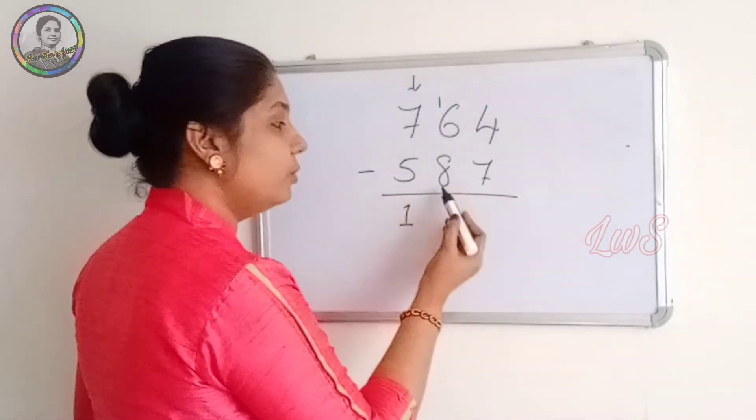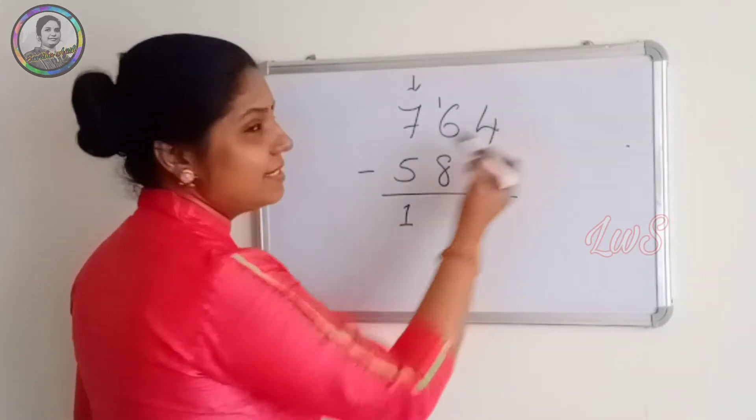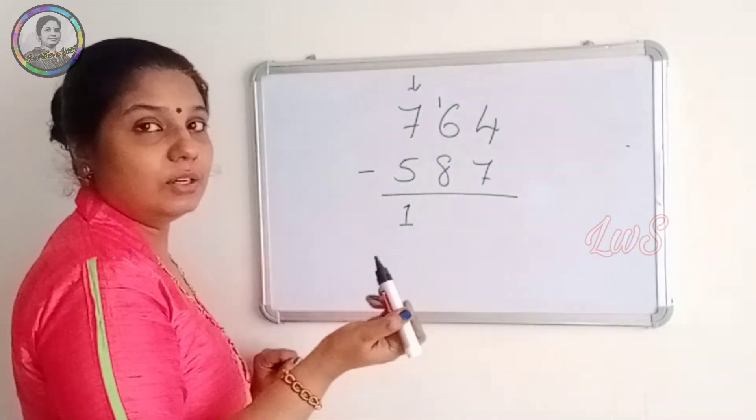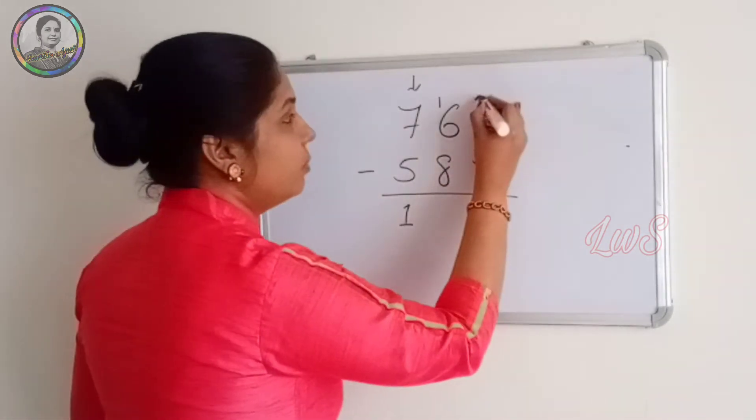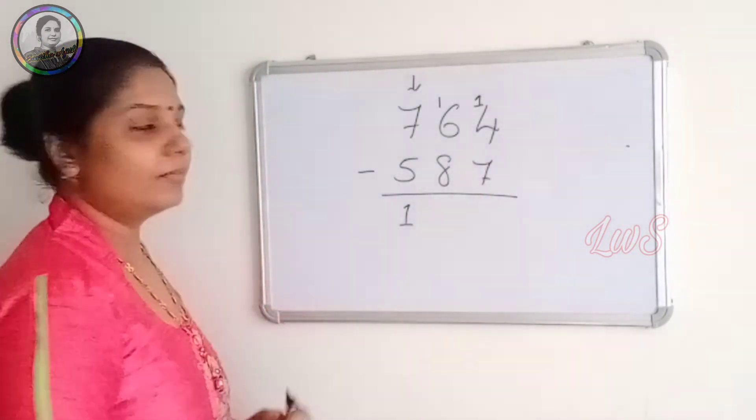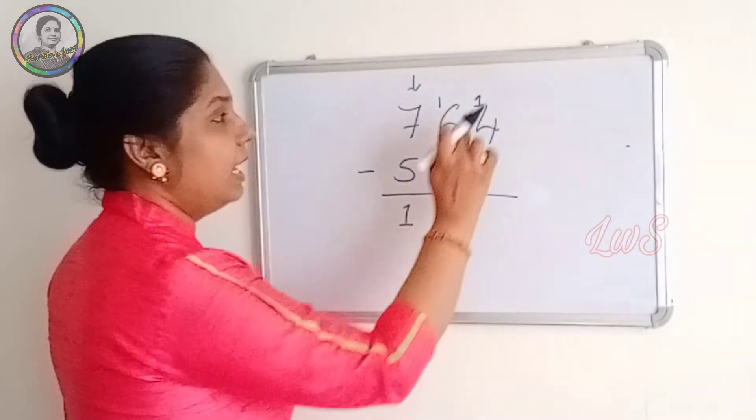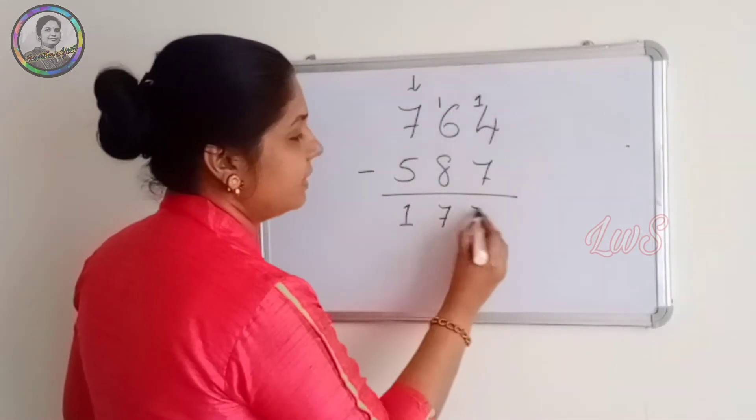But before writing that 8, just look for the neighbors. Here again, 4 minus 7, not enough. So just give 1 to this 4. So we write 7 here, 8 minus 1. And then here 14 minus 7, 7.